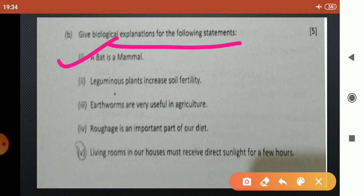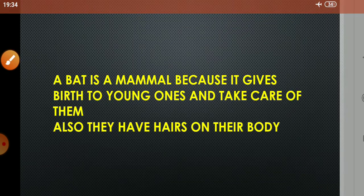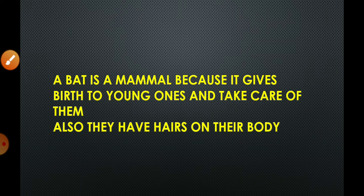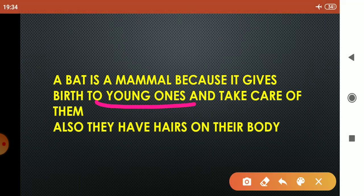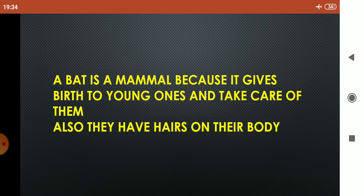Now the second part of this question is give biological explanations for the following statements. The first one is a bat is a mammal. A bat is a mammal because it gives birth to young ones. This is a characteristic feature of mammals and they also take care of them. And mammals have hairs on their body and bat also has, therefore bat is a mammal.